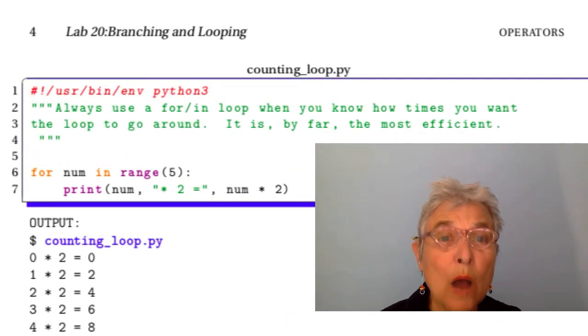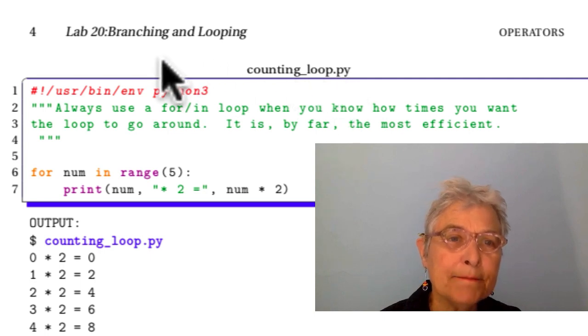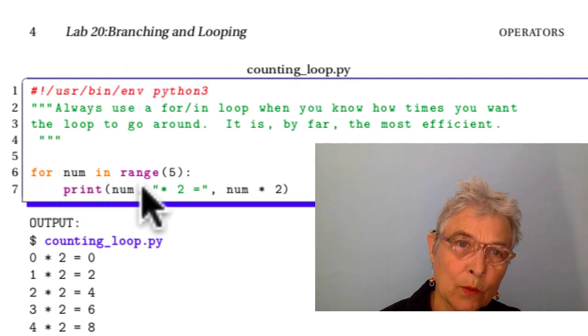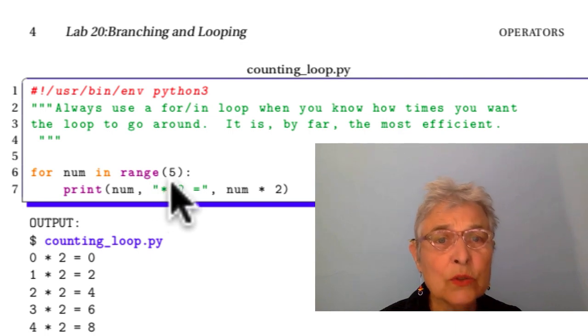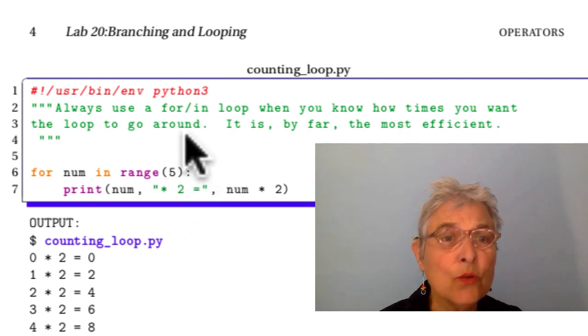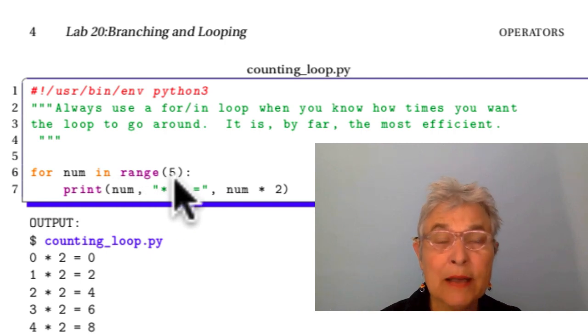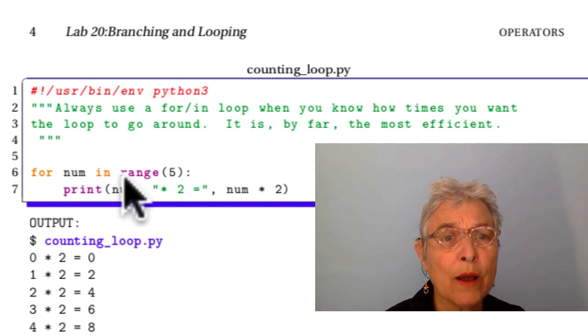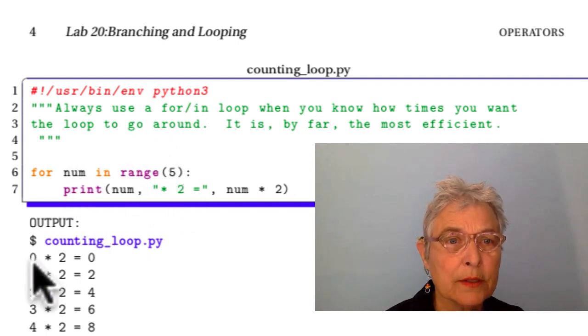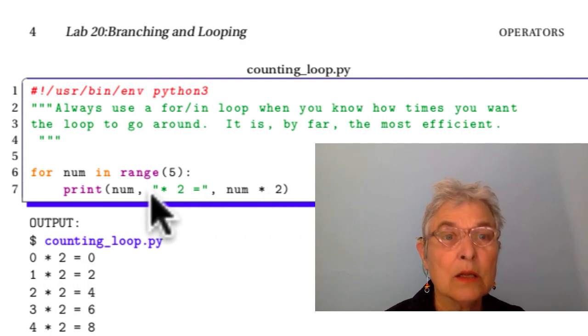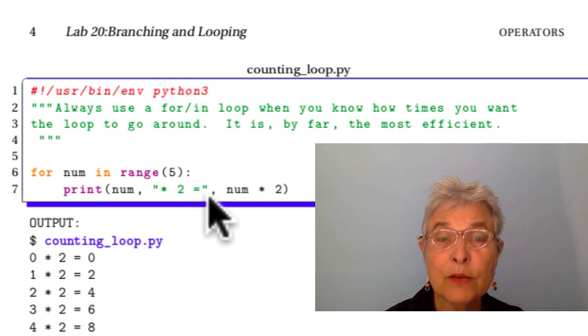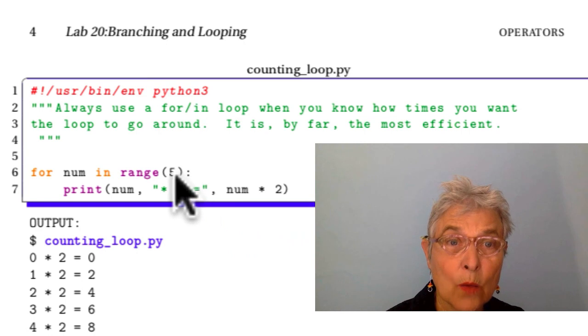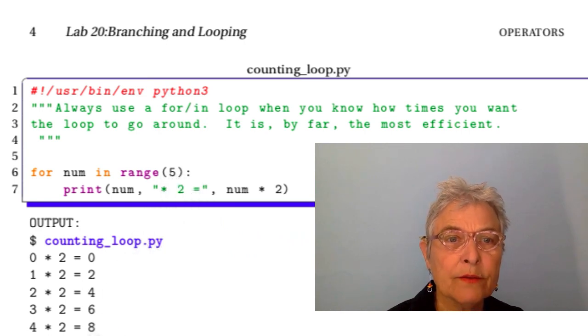In counting loop.py, I am saying again that for num in range is used a lot and you want to use it when you know exactly how many times you want to go around whether you use that num or not. This loop is going to go around five times starting with the zero and there it is. Zero times two is zero. Here we're printing out times two equals and here we're giving the answer. We're going to end at four because we'll never get to the five. Got it? Big thing.